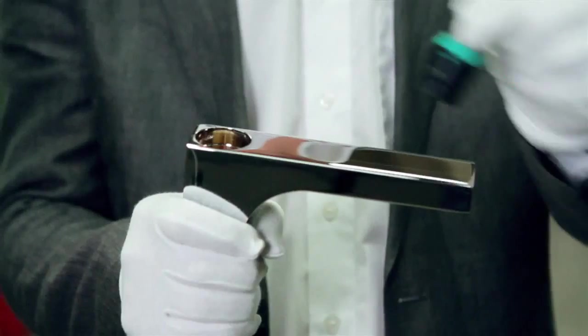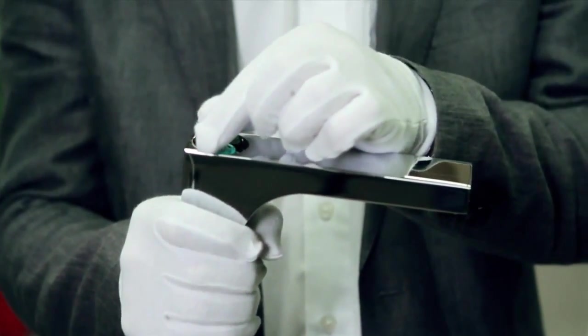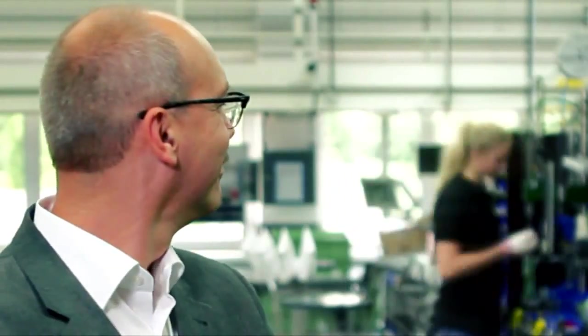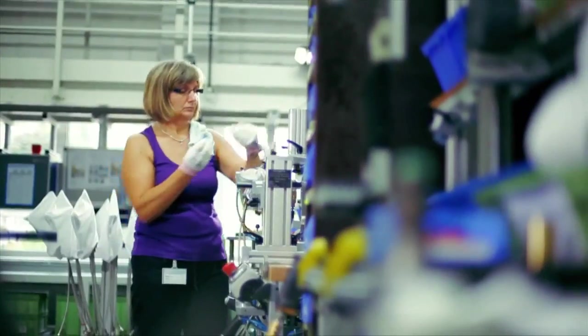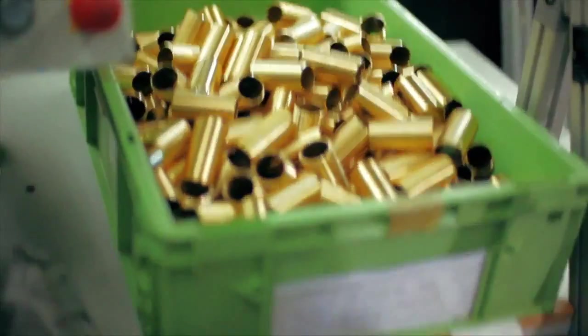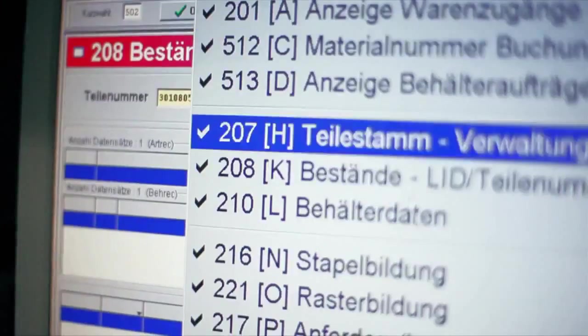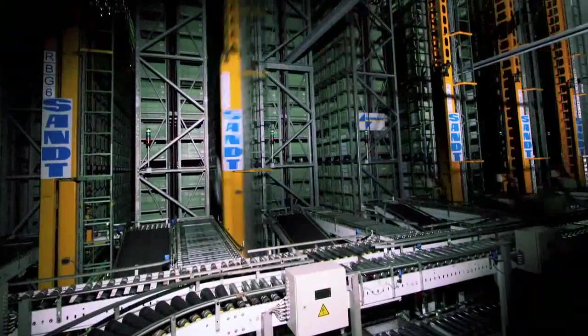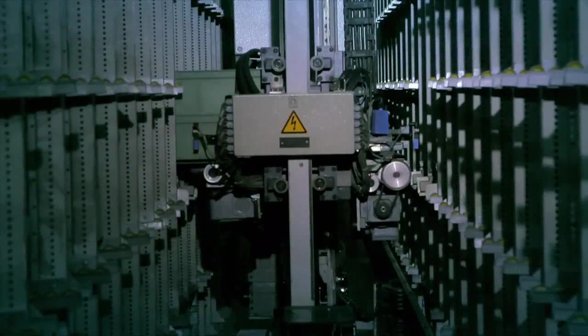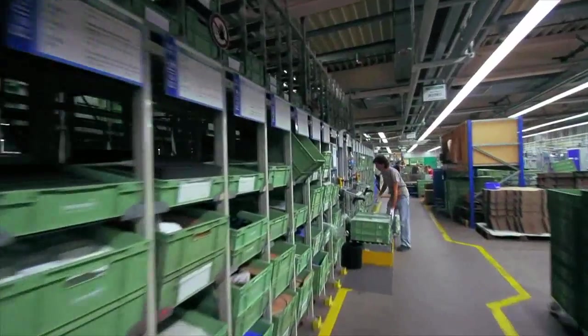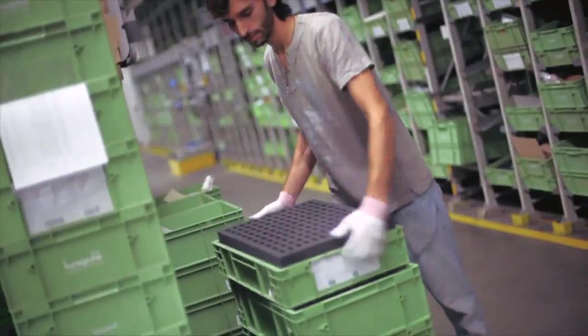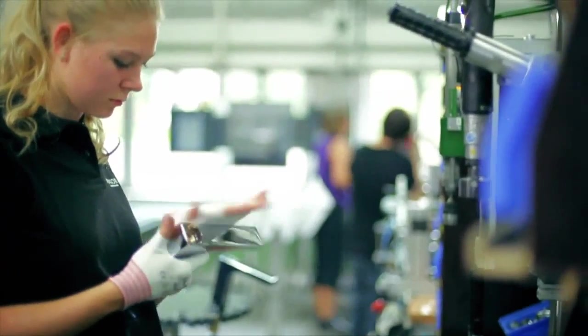The Hansgrohe final assembly department is where everything that belongs together comes together. The mixer is fully assembled and then sent on its way. Not quite as quickly as that, of course. First, the assembly line employees need all the individual parts. These are electronically accessed from the small parts warehouse. Here it's not only speed but also precision that matters. A barcode system ensures that the right parts are quickly transported along the conveyor belts.